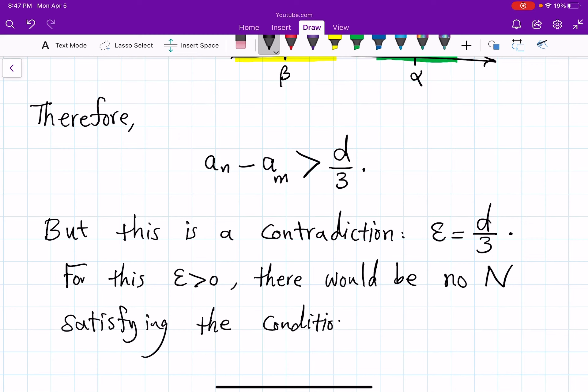because again you give me this capital N and I just showed you how I find two indices where the distance which was supposed to be less than epsilon is actually bigger than epsilon and that hits a contradiction